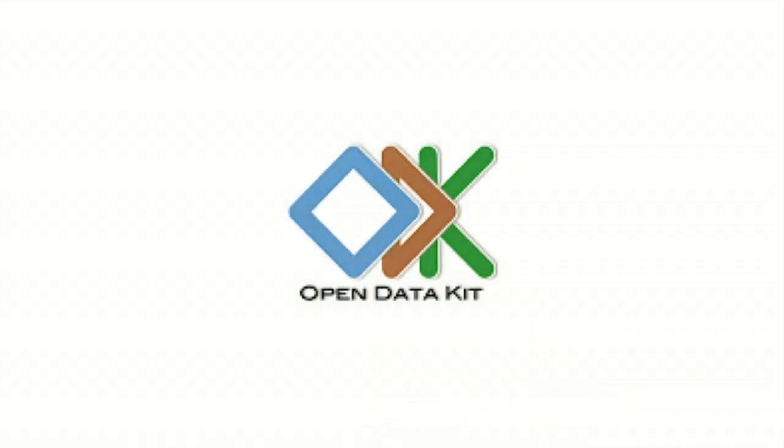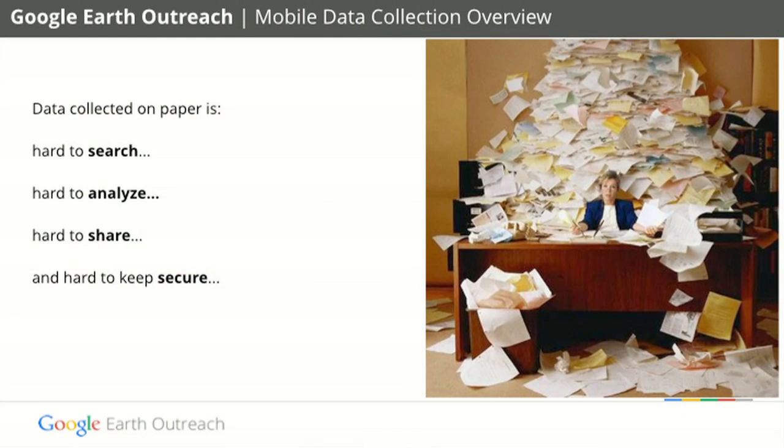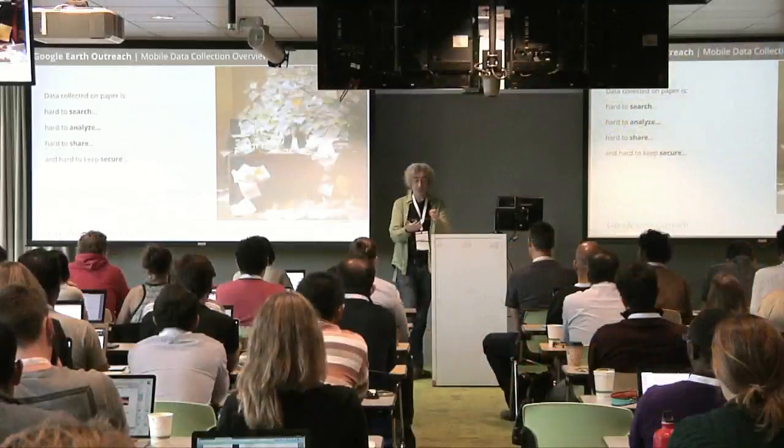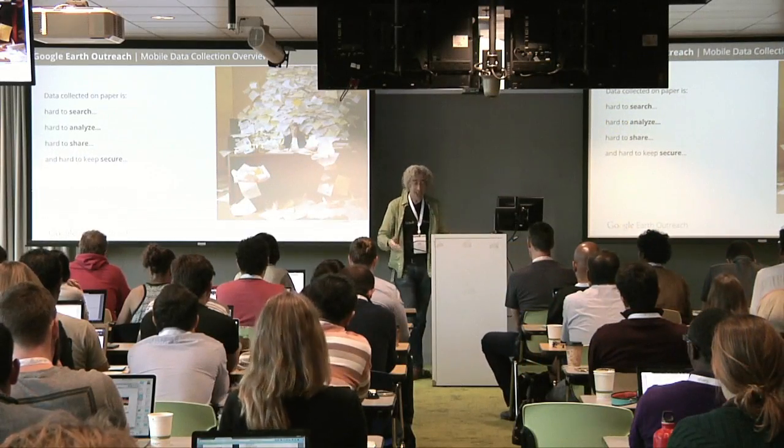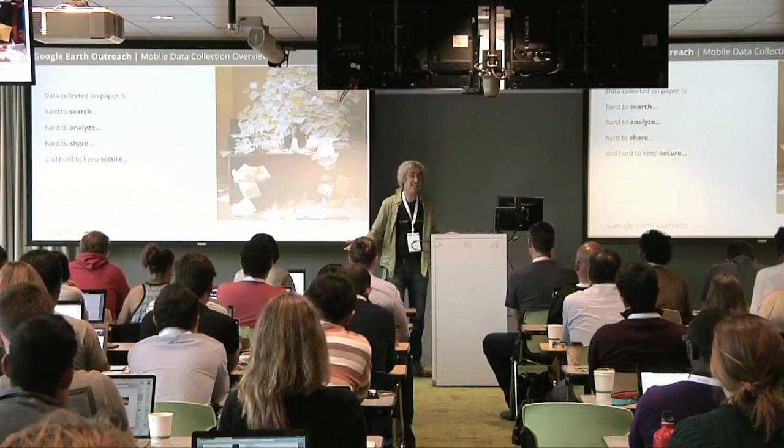I'll start with Open Data Kit. Open Data Kit is a tool for collecting data on the ground — it's a mobile data collection tool. In the past, most people were collecting data on paper. You would go out, if you were doing a forest inventory, and collect information about your trees on a big piece of paper, carry a camera and a GPS, and end up with stacks and stacks of paper. Often those surveys end up sitting on your desk or in your file cabinet before you get to them, and then you have to type them into a computer and analyze them.